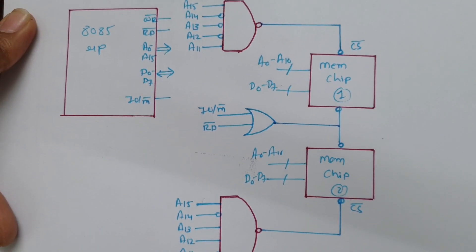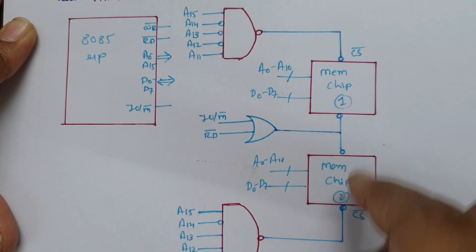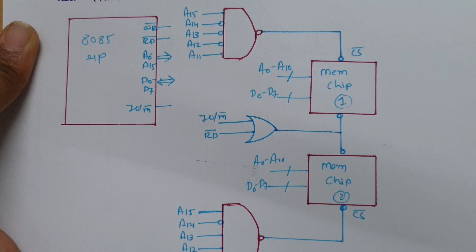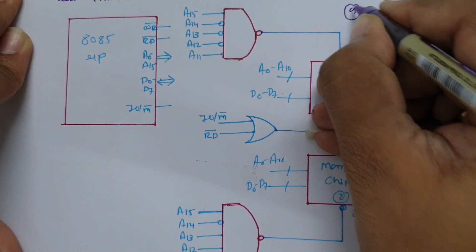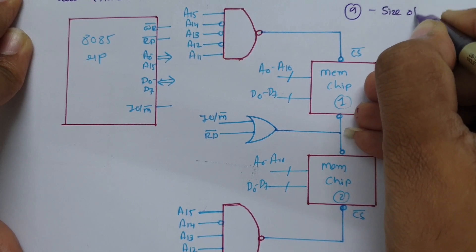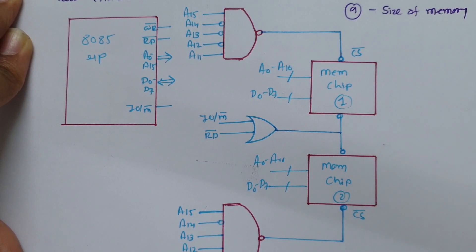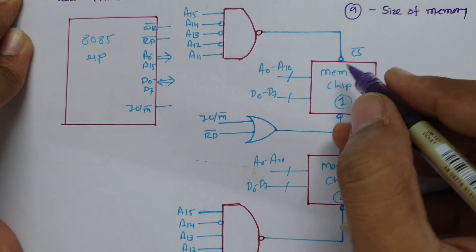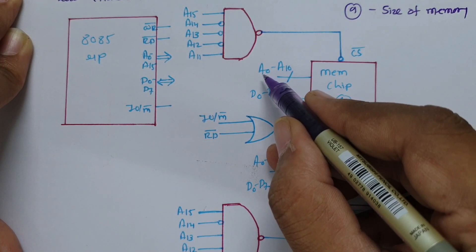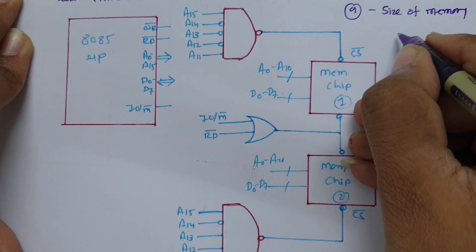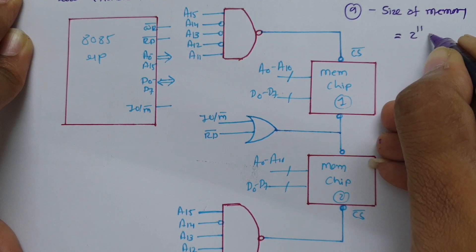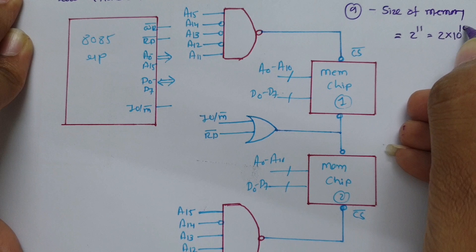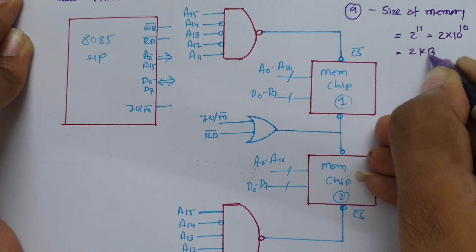The first question is: what is the size of this memory? To calculate the size, we need to see how many address lines are there with chip 1 and chip 2. For chip 1, the total number of address lines is from A0 to A10, meaning 11 lines. So the size of memory is 2 to the power 11, which equals 2 KB for chip 1.